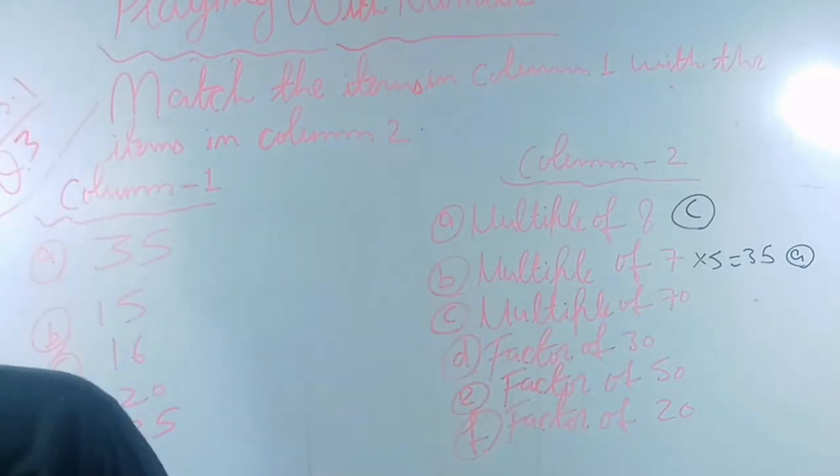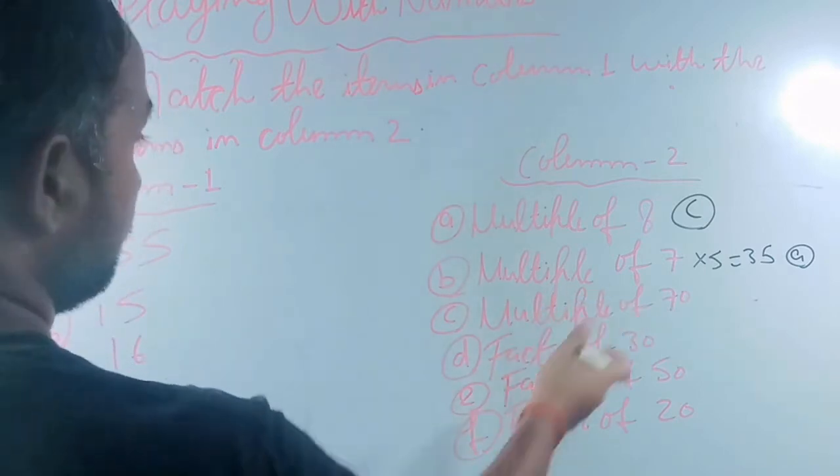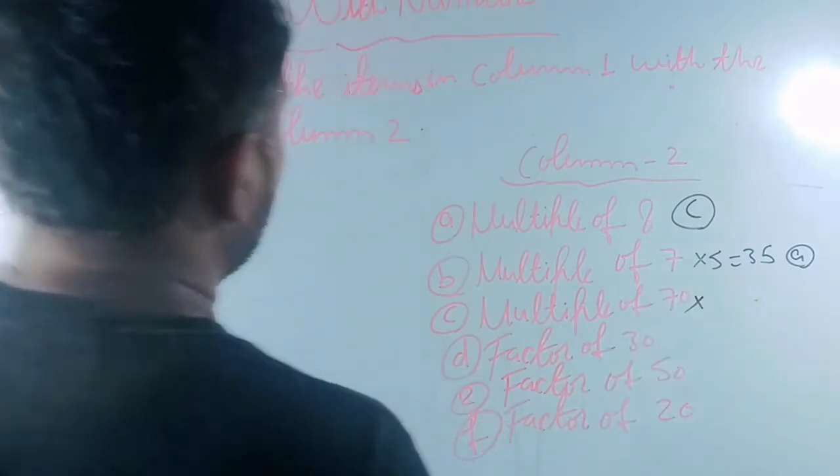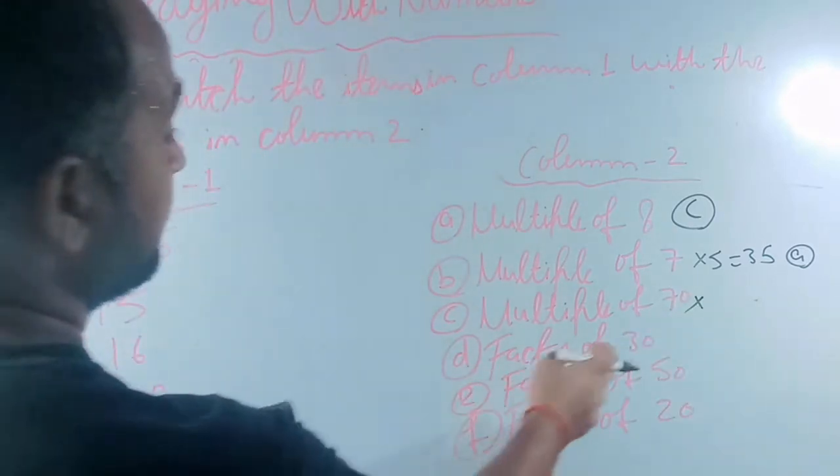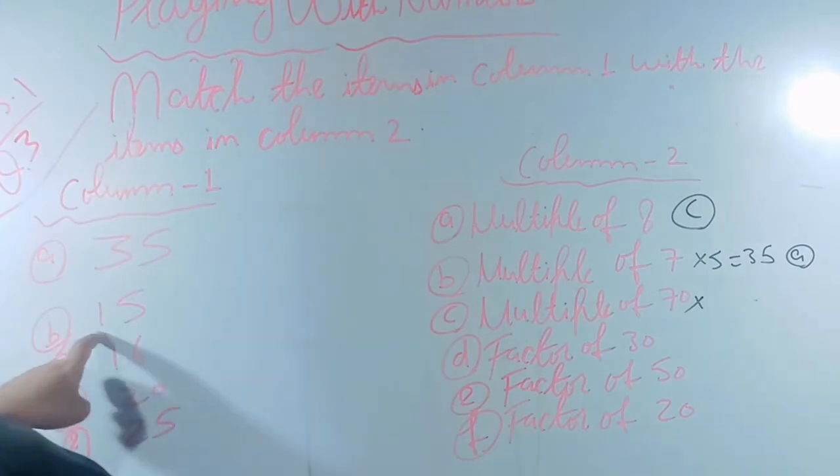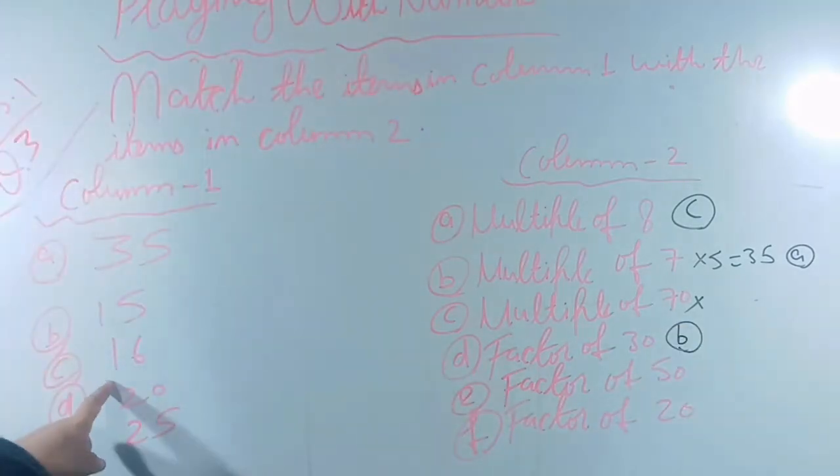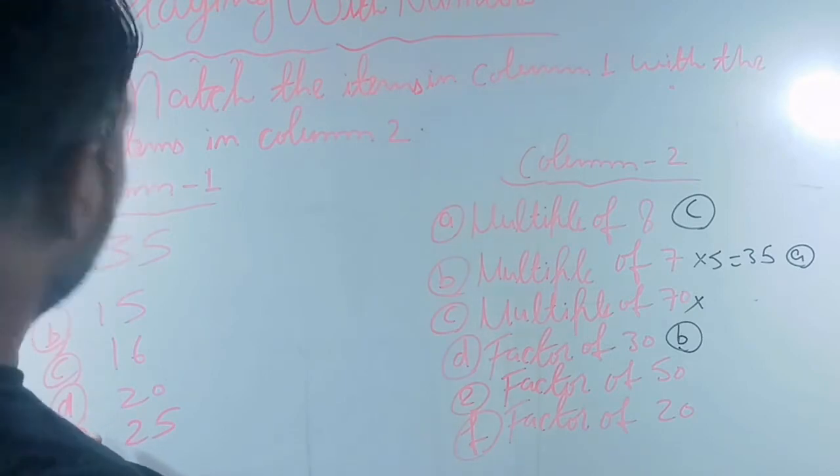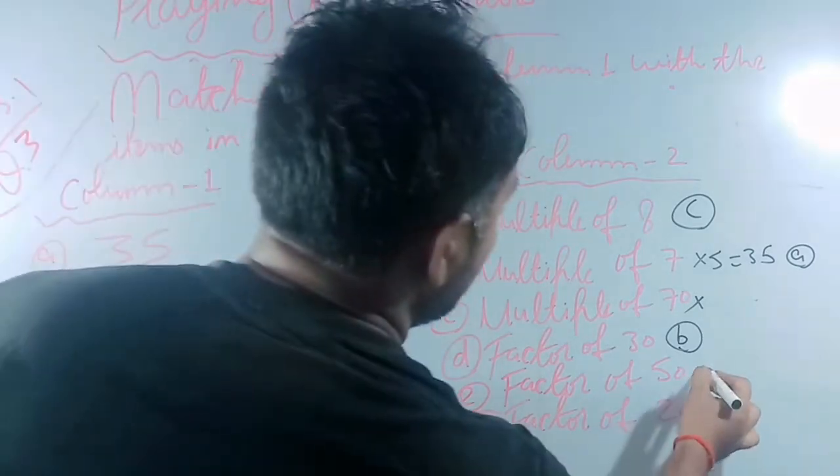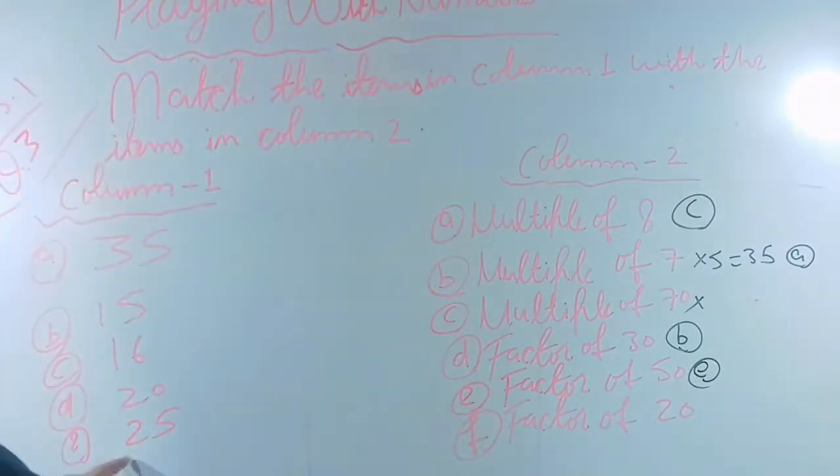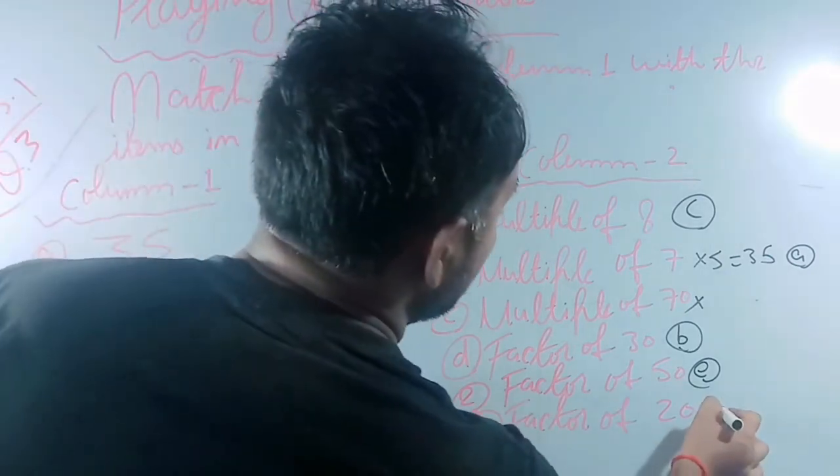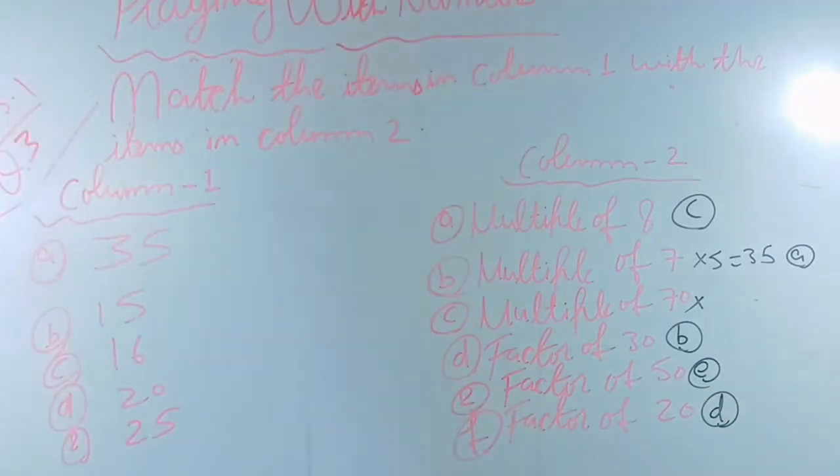16 is not part of anything because one option is extra. Factor of 30 is 15, that's B. Now factor of 50, we have to see factor of 50, that is 25, which is E. Factor of 20, the number itself is a factor, so that's D.